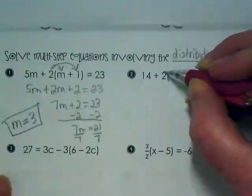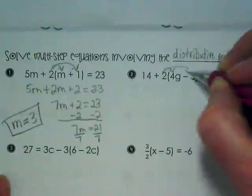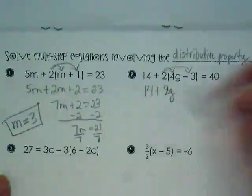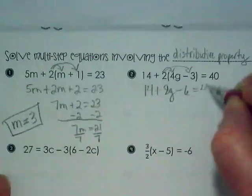So we are first distributing this to 14 plus 8g minus 6 equals 40.